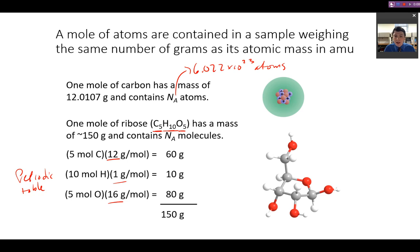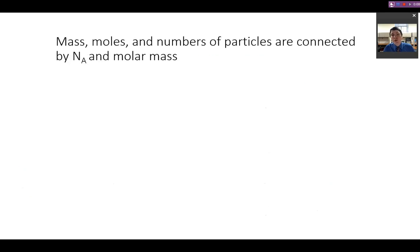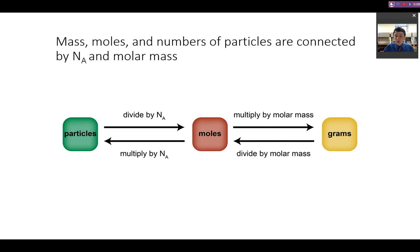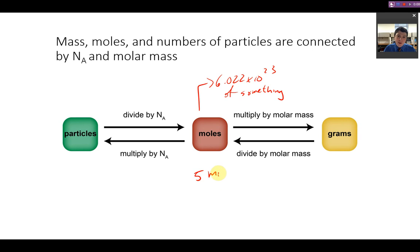You simply add together the number of each atom times the mass of that atom. We can interconvert between mass, moles, and number of particles. A mole is 6.022 × 10²³ of something. If you take the number of moles — say five moles — and multiply by the molar mass, you get the mass in grams. If you multiply the number of moles by Avogadro's number, you get the number of particles — in this case, five times 6 × 10²³ particles.